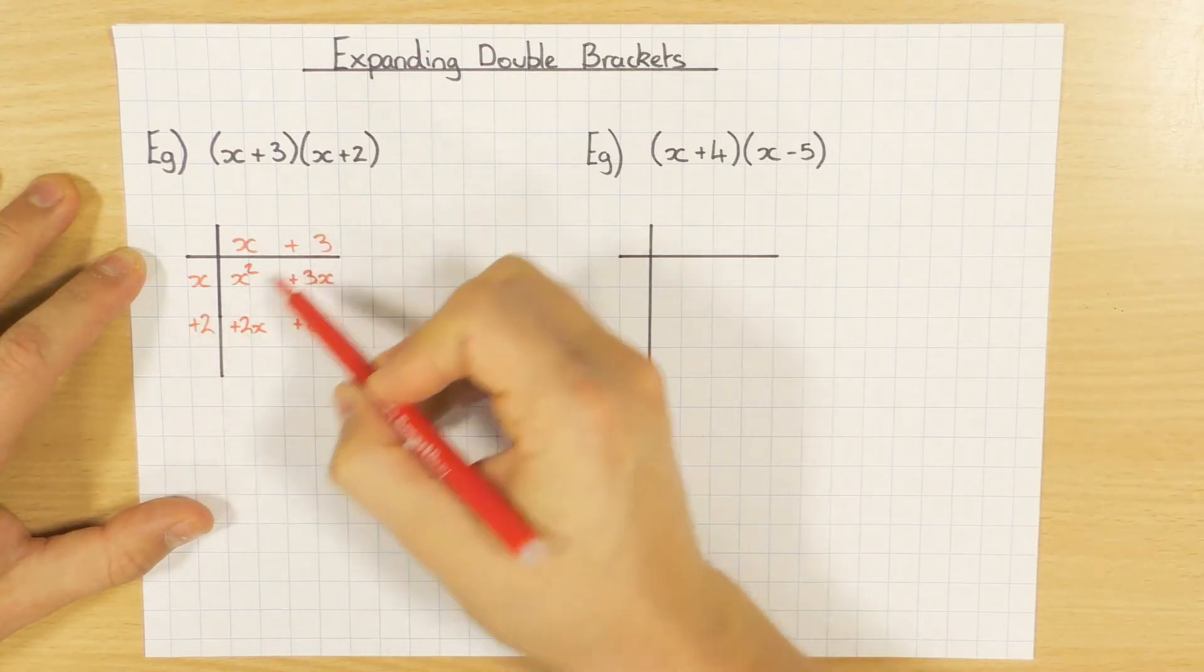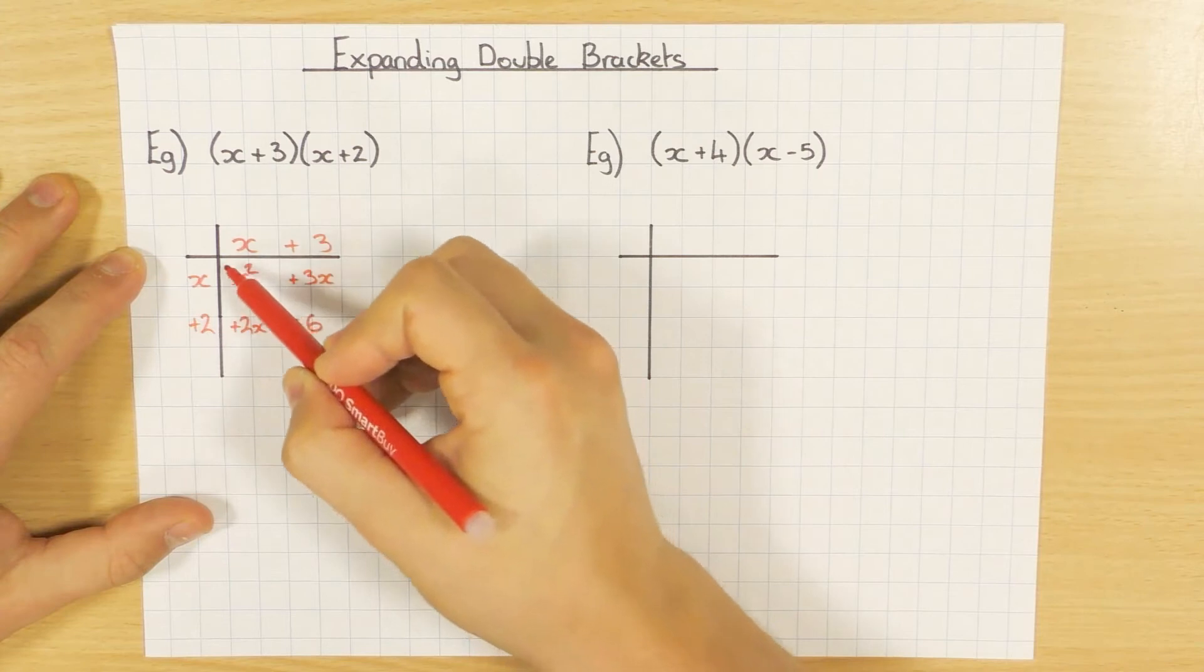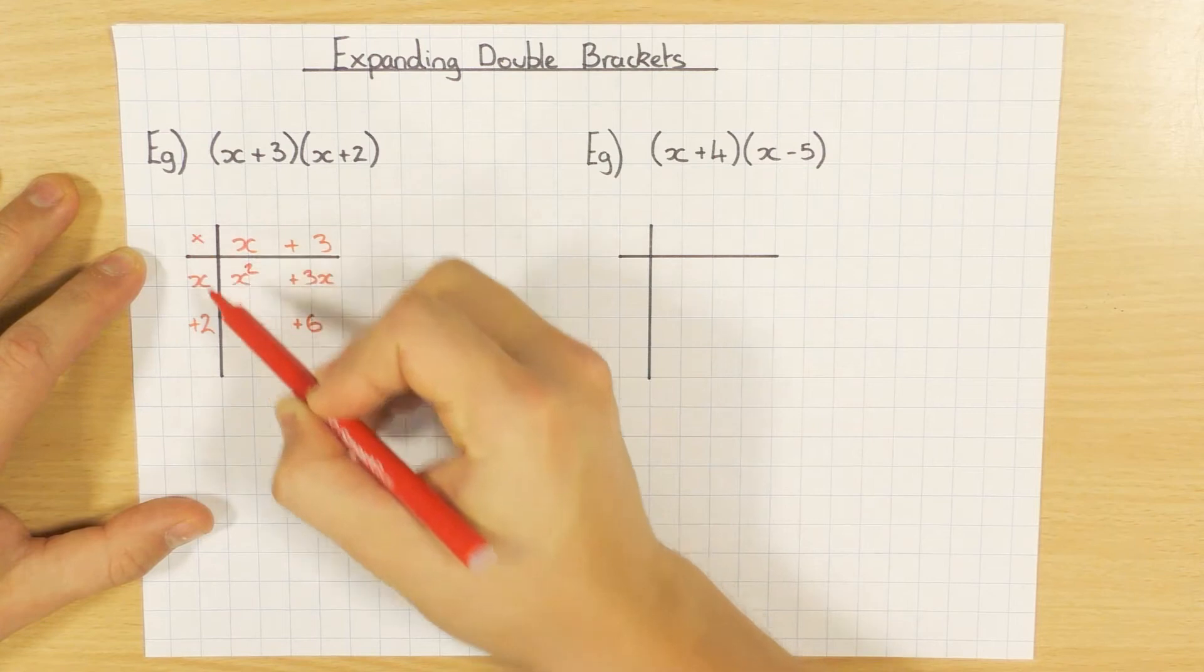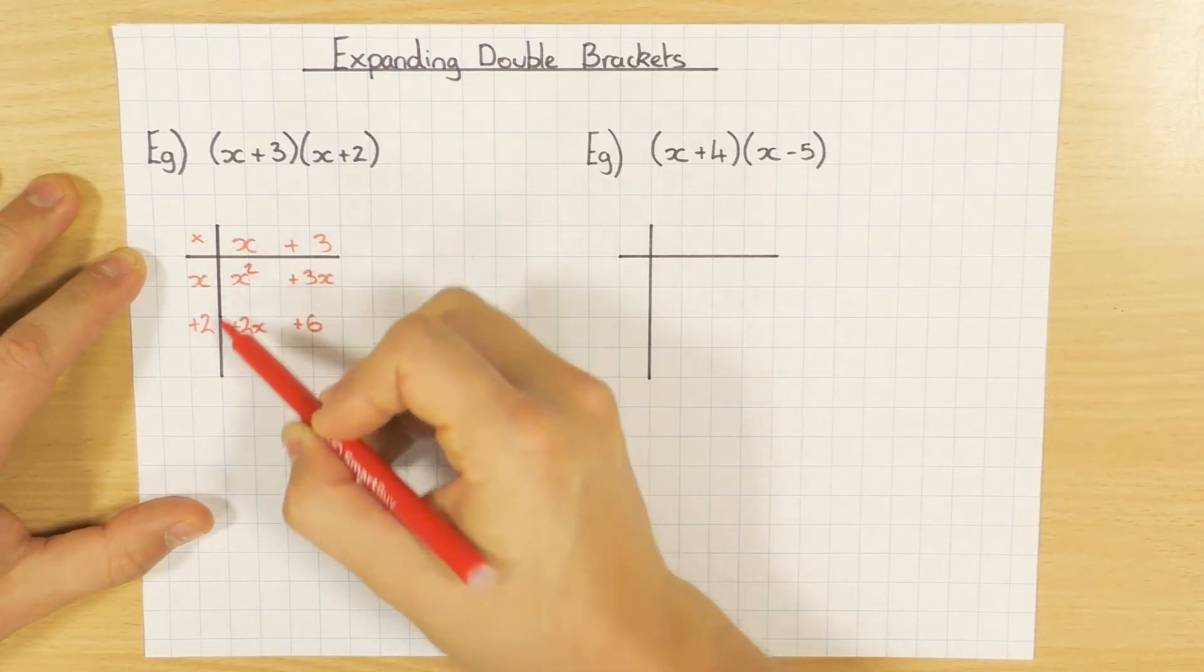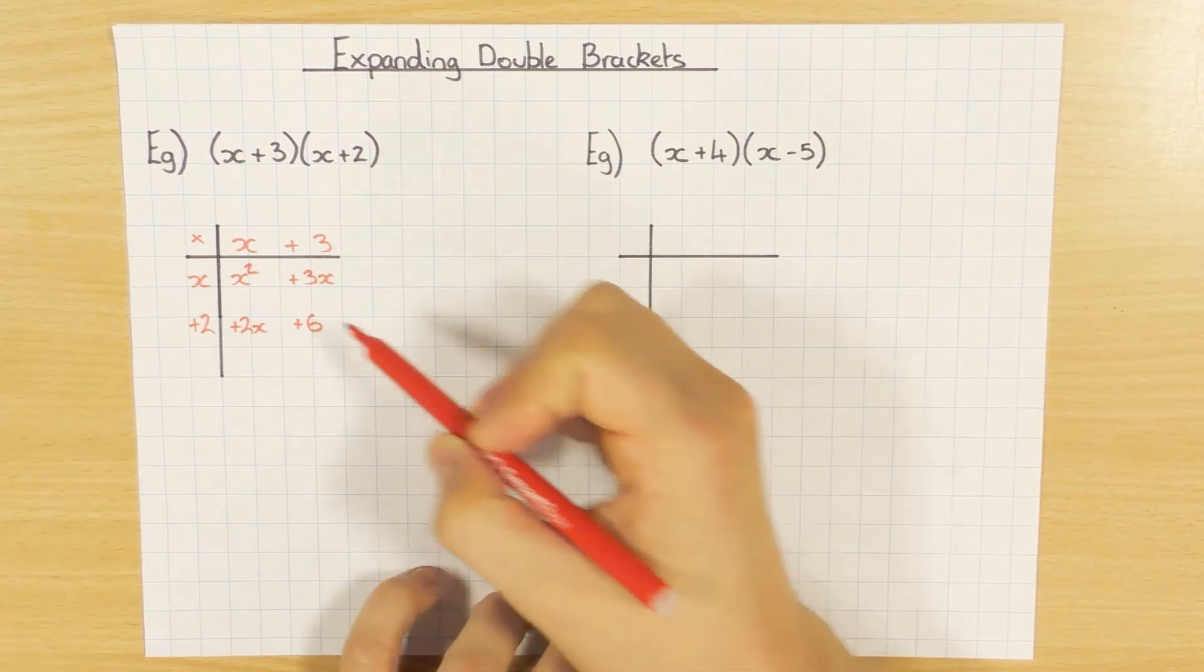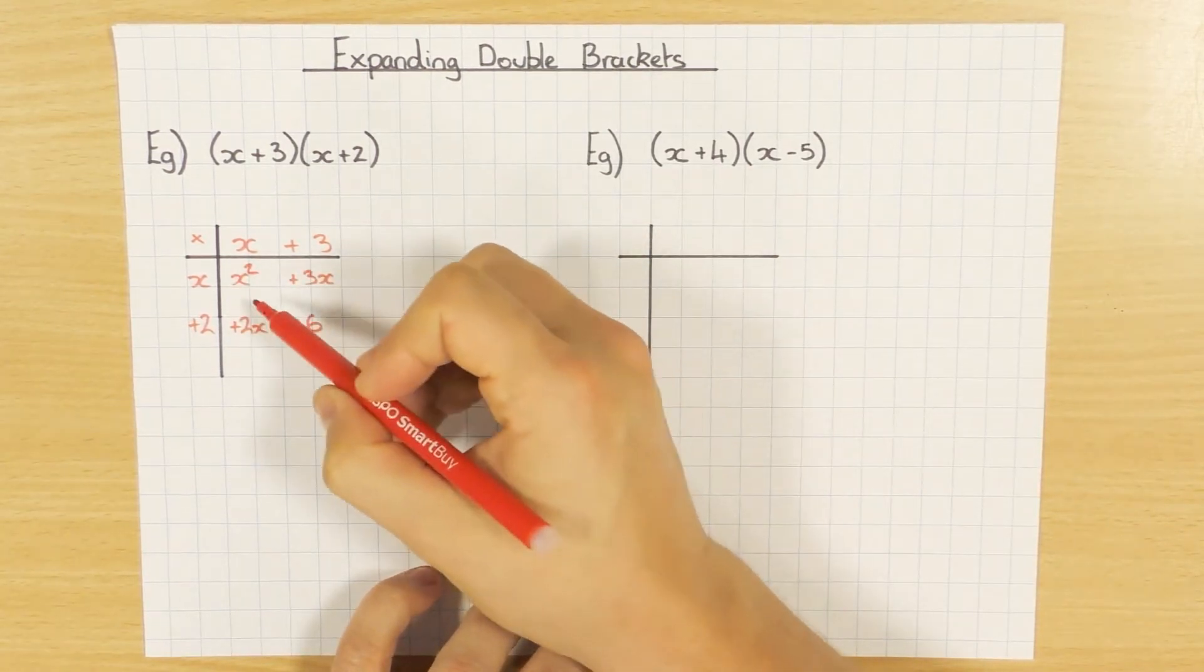The most common error people will do is they will add these, so please make sure you are multiplying when you are filling in the table. If it helps you can put a little multiply sign up here just as a reminder that you are multiplying to fill in the grid.